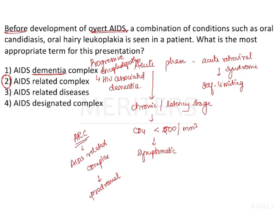The third option, AIDS related diseases, is a generalized term indicating the various diseases or conditions associated with HIV, such as Kaposi's sarcoma or non-Hodgkin's lymphoma. The fourth option, AIDS designated complex, is not a definitive terminology. Therefore, among the four options, the condition used to describe this presentation in an AIDS patient is AIDS related complex, acting as a prodromal phase before the development of symptomatic HIV infection.